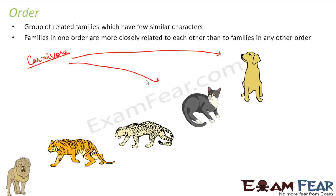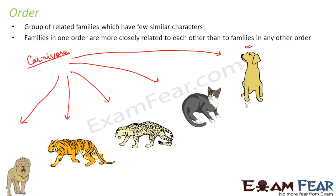Dog, cat, leopard, tiger, and lion — but when you talk about their families, they are different. The family of a dog is Canidae. When you talk about the family of a cat, leopard, tiger, or lion, they all belong to the family Felidae.